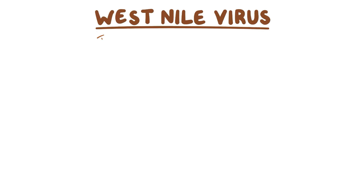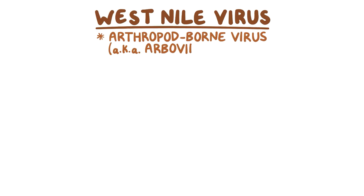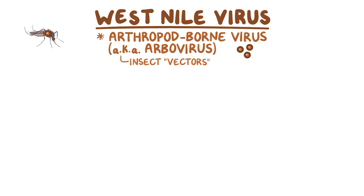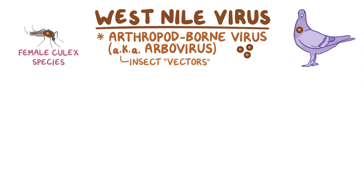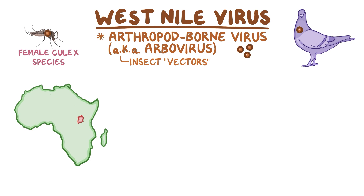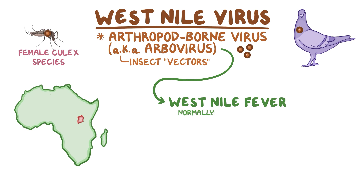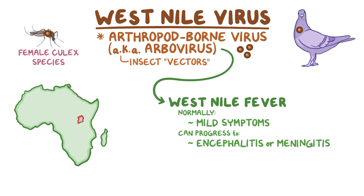West Nile virus is an arthropod-borne virus, or arbovirus, which are viruses that get transmitted through insects called vectors. The vector for West Nile virus is the mosquito, and gets transmitted in highest frequency through the female Culex species, which feeds on birds. The virus was first discovered in Uganda, west of the Nile, but has since been reported throughout the world. The virus causes a disease called West Nile fever, which normally causes mild symptoms, but can progress to full-blown encephalitis or meningitis.